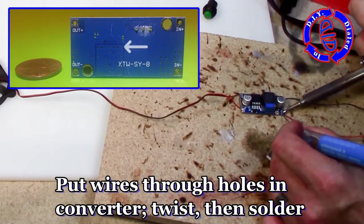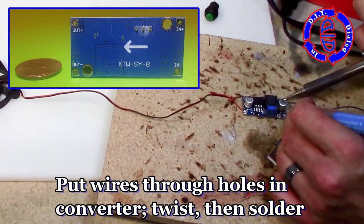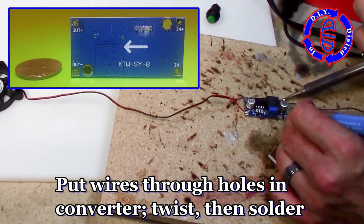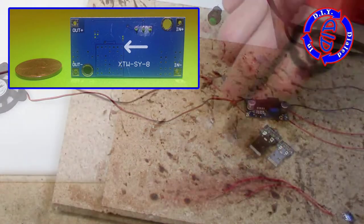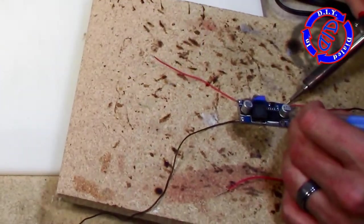This step-up converter came with preset holes clearly marked for where the power goes in and where the power comes out so I'm going to put the wires through there, twist them up and add a little bit of solder to make everything really secure.